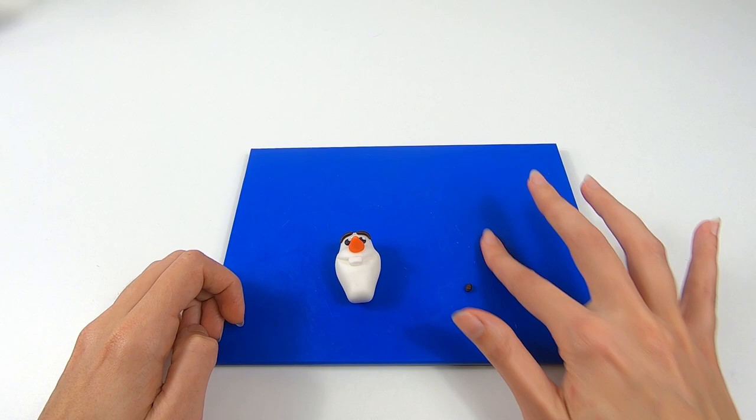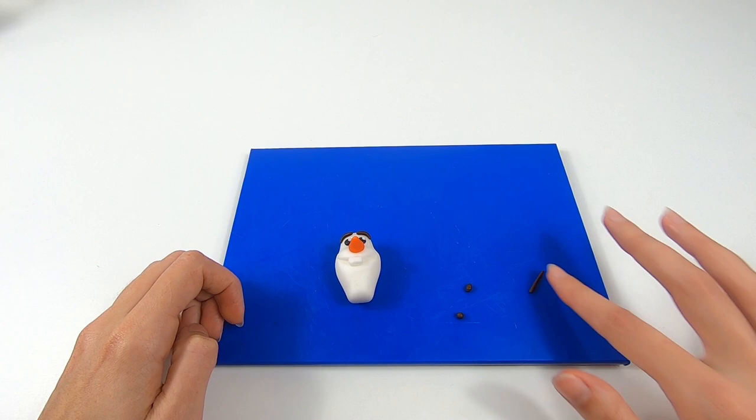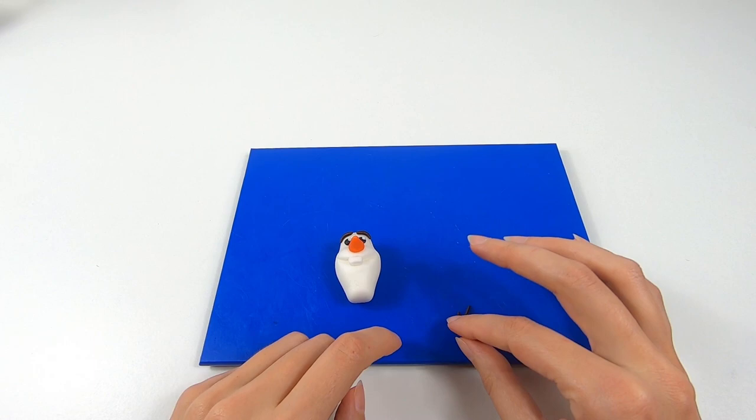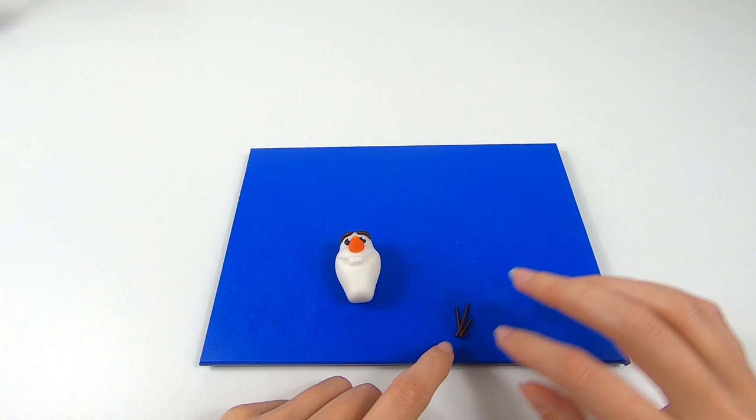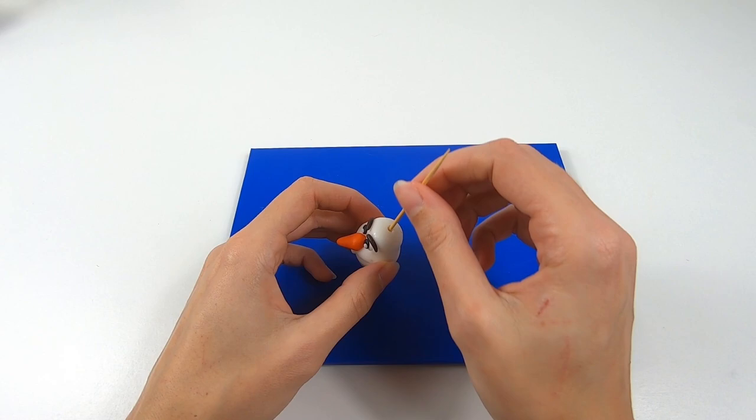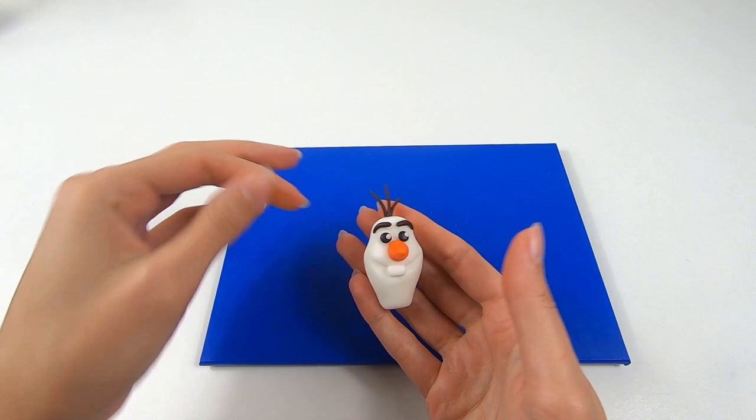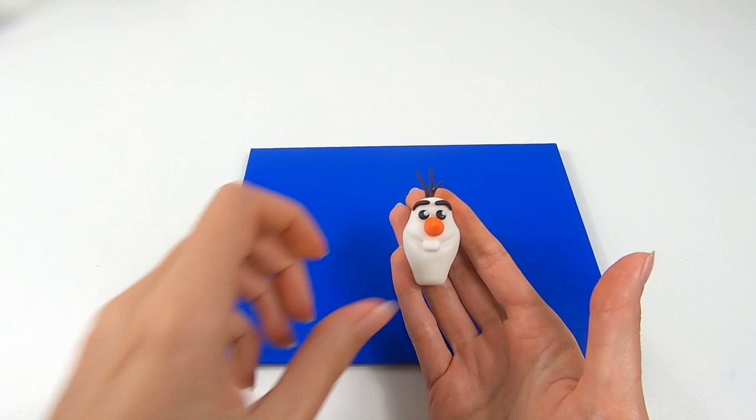Finally for Olaf's head we're just going to add in some hair. So roll out three little spaghetti pieces using dark brown modelling paste making them all slightly different lengths. Apply some water to the bottom of the longest piece and add the other two pieces so all these are glued together at one end. Make a little hole in the top of Olaf's head. Apply some water and pop the hair in. And that is Olaf's head complete.